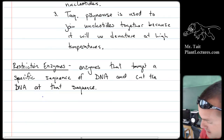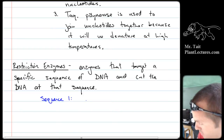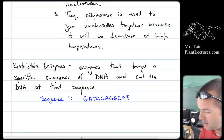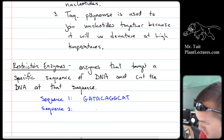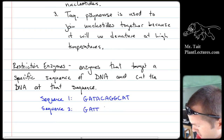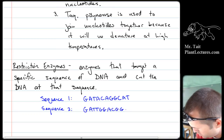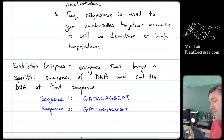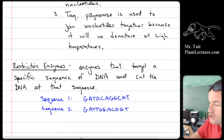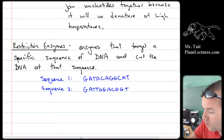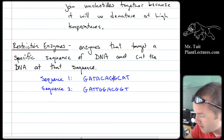Let's say sequence one is G-A-T-A-C-A-G-G-C-A-T, and sequence two is G-A-T-A-T-T-G-G-C-A-C-G-G-C. These are two pretty different sequences of DNA — there have been some point mutations. If a specific restriction enzyme cuts at the GG combination, then the top sequence gets cut at one point and the bottom sequence gets cut at two points.